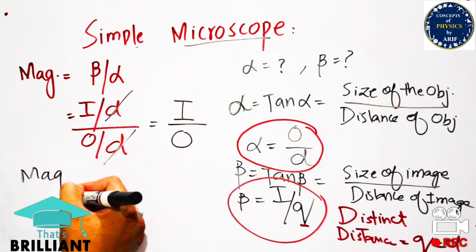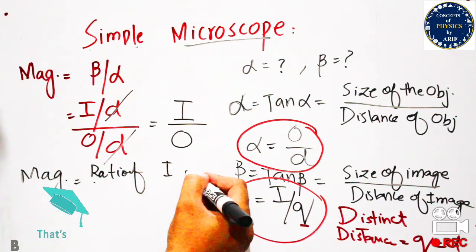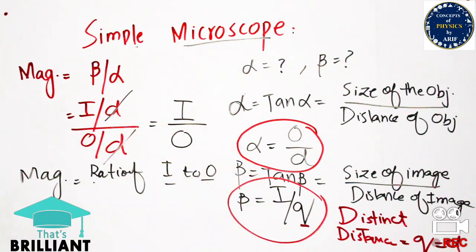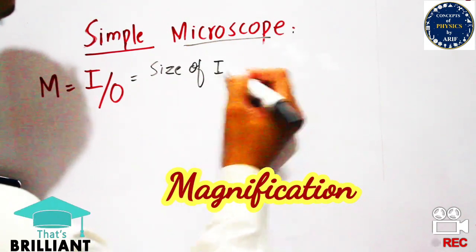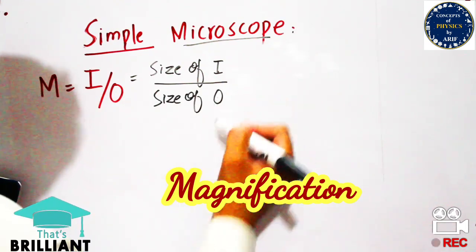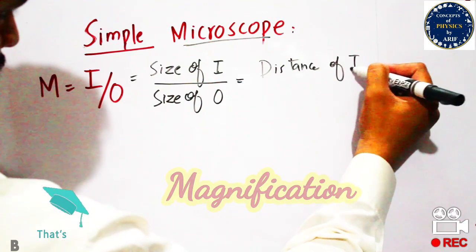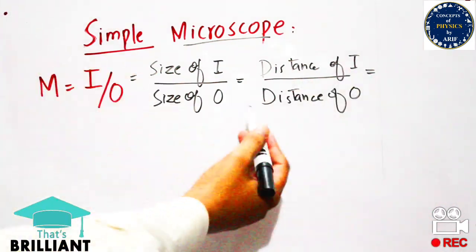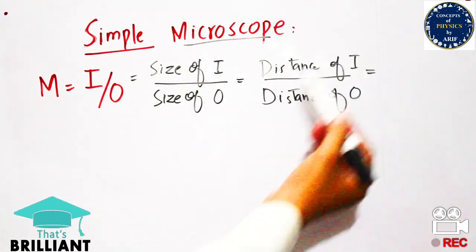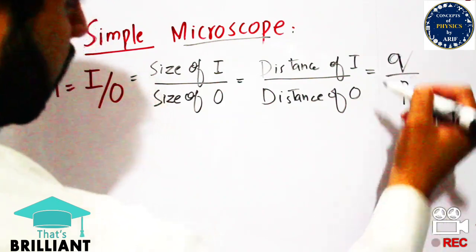So I denotes the size of the image and O denotes the size of the object, meaning magnification is the ratio of image size to object size. This was also discussed in a previous lecture: magnification equals size of image over size of object, which can also be expressed as distance of the image over distance of the object.